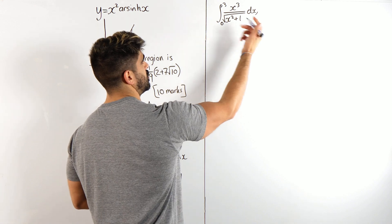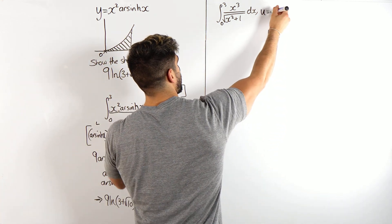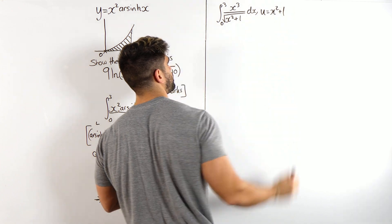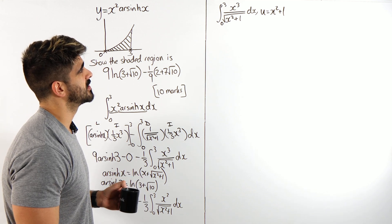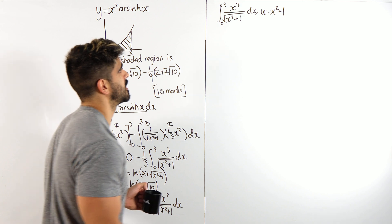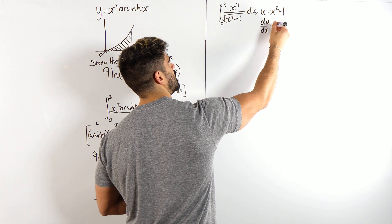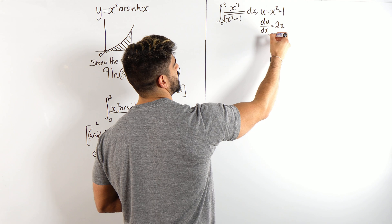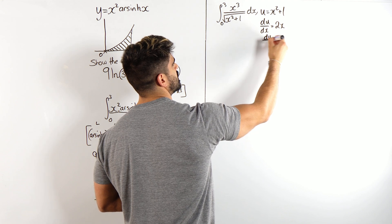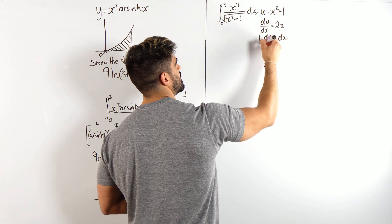I'm going to let this be U. Okay. So, we have to differentiate that, change dx into du, and I'm also going to have to change the limits, aren't I? Okay. So, du by dx is 2x, so switching these around, I get du divided by 2x is dx, that's my substitution.